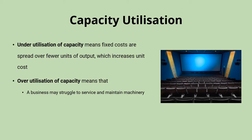The other side is that over-utilisation of capacity is going to make it difficult to service and maintain machinery. If a manufacturing business is working at absolutely full capacity — 100% capacity utilisation — that will be good for a while because demand is high and costs per unit are lower, but they never have time to service or maintain their machinery. Machinery might start to break down over time, customers might get let down, and that could negatively affect the reputation of the business. Also, at capacity utilisation close to 100%, you're ultimately going to have to turn away customers who want to use your business but can't be served.